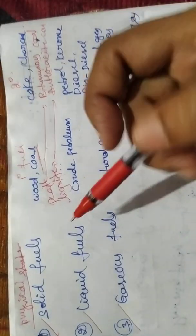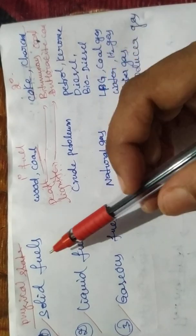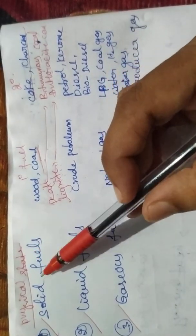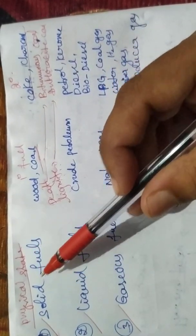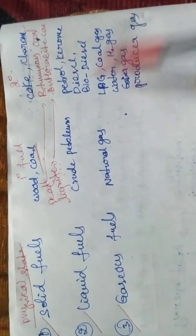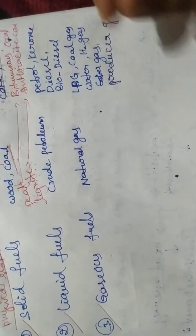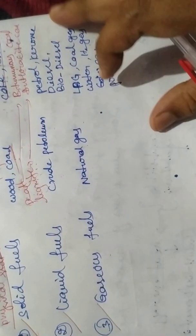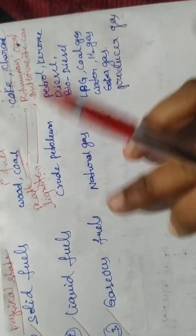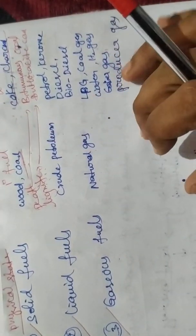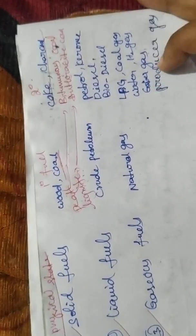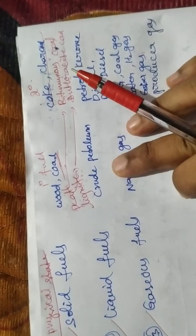So this is the classification of fuels. Based on physical state, fuels are solid fuels, liquid fuels, and gaseous fuels. Based on occurrence, fuels are classified into primary fuels and secondary fuels.